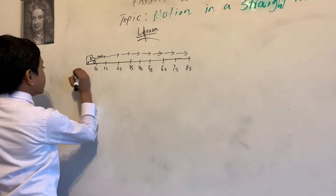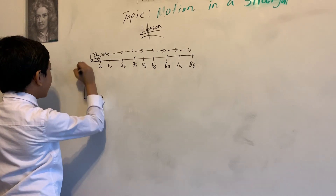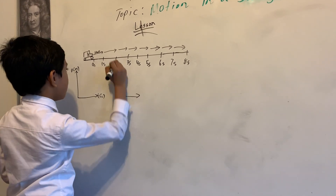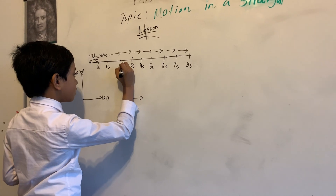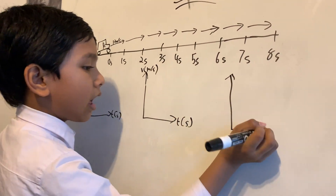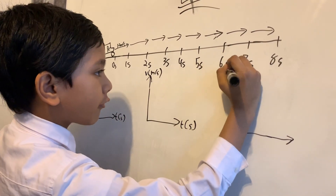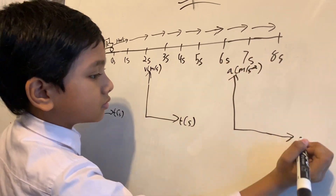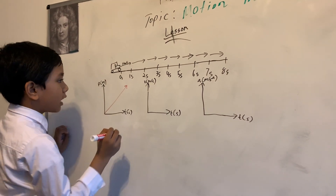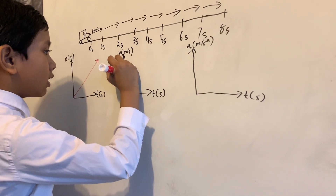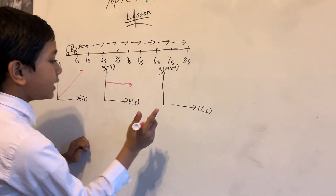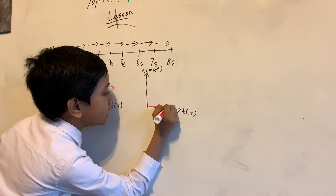Your job is to draw the p-t, v-t, and a-t graph. Remember this order for future lessons. The position versus time would just be linear — I'll explain why later. The velocity would just be a straight line because it's constant and doesn't change. And the acceleration is zero because the velocity never changes; it just stays at 10.